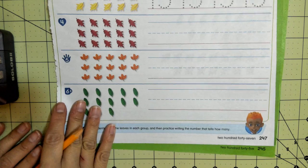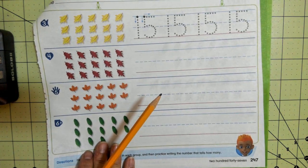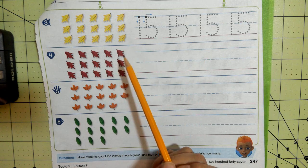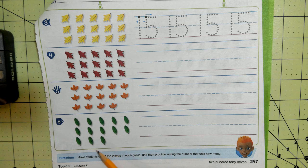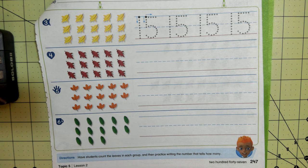So you're going to work on page 247 yourself. You're going to count each set of objects, and then you're going to write how many four times. Okay, so you'll do all of these on your own. When you're done, you can send me pictures to Google Classroom, ClassDojo, or my email.